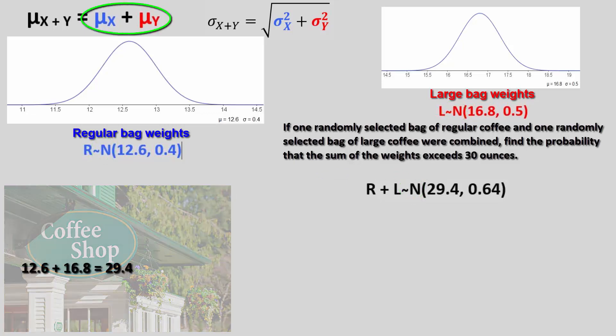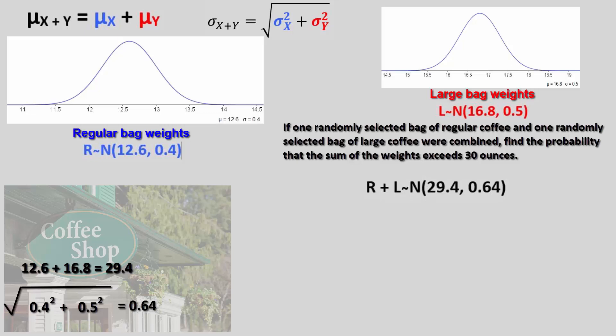We can add the means to get the new mean of 29.4 ounces, and we can find the square root of the sums of the variances to calculate the joint standard deviation of 0.64 ounces.